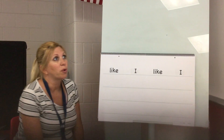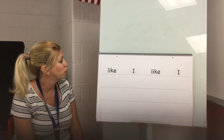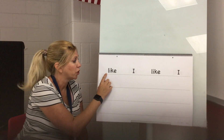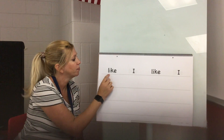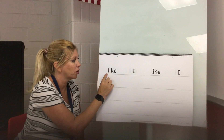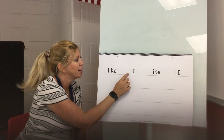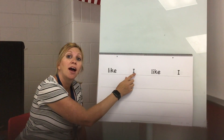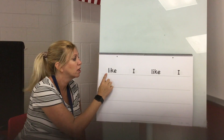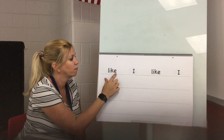You're gonna read some irregular high-frequency words. I'll model how to read the first two for you. My word: like. My turn. Word: I. Spell I: I. Your turn. Word: like. Spell like: L-I-K-E.